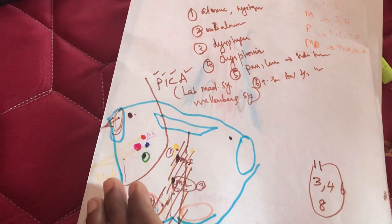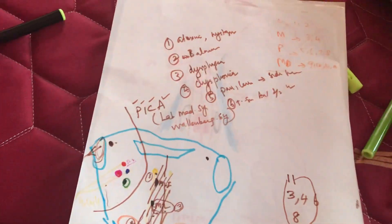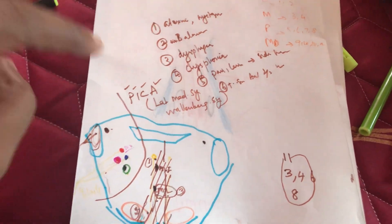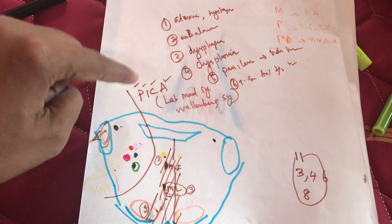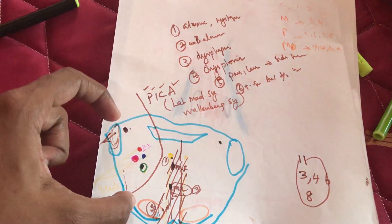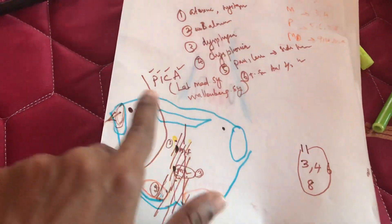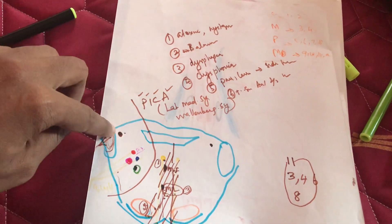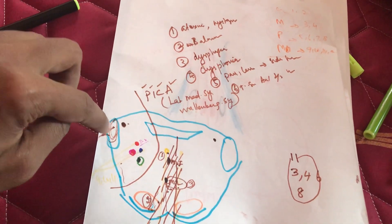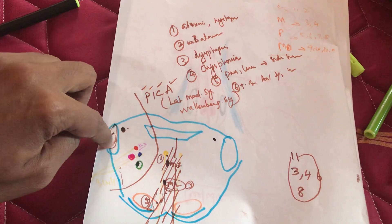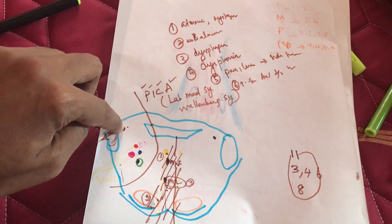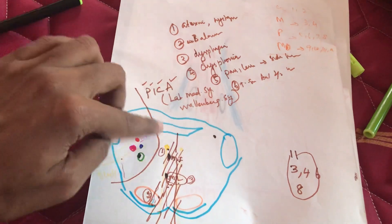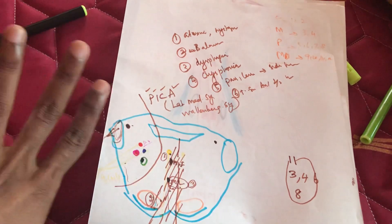This covers both lateral medullary syndrome and medial medullary syndrome components — that is all about the medulla oblongata. PICA syndrome is very important for short notes. You must draw the cut section, place all nuclei correctly, and write about the cerebellum, vestibular nucleus, dorsal nucleus of vagus, spinal nucleus, and all the nerves. Thank you.